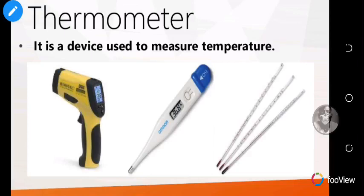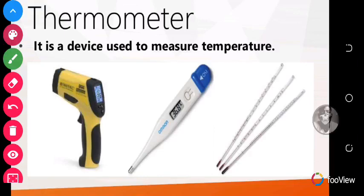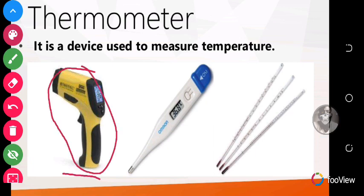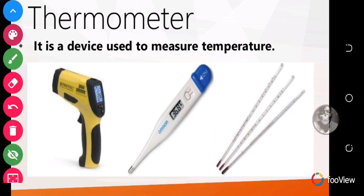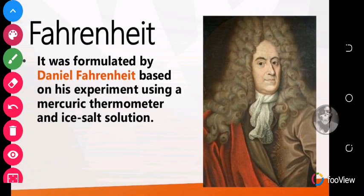A thermometer is a device used to measure temperature. For instance, this is a type of thermometer being used for COVID-19 cases to measure the patient's temperature — this is called a gun thermometer. Another type is placed under the armpits, and another type is used for measuring the temperature of materials like food.